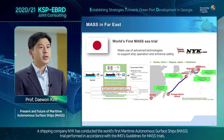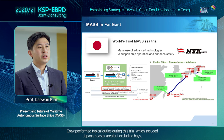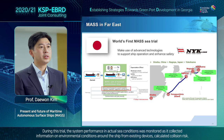A shipping company NYK has conducted the world's first Maritime Autonomous Surface Ships trial in accordance with the IMO's guidelines for MASS trials. The vessel IRIS Leader, a large NYK-operated car carrier with a gross tonnage of 70,000 tons, was navigated day and night using automated navigation systems in 2019. The crew performed difficult duties during this trial, which includes Japan's coastal area. During this trial, the system performance in actual sea conditions was monitored as it collected information on environmental conditions around the ship from existing devices and calculated collision risk.